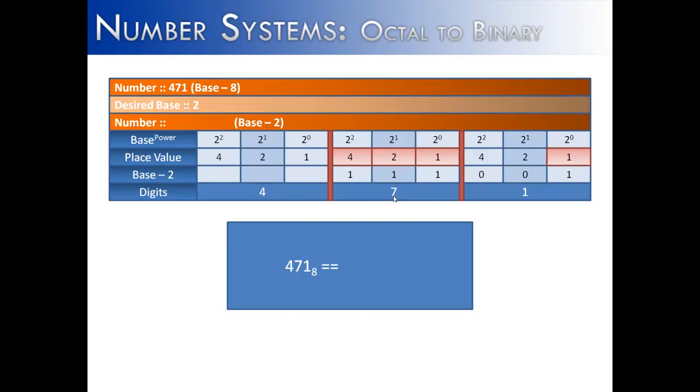And then we do the same thing with the last one, which is going to be a 4. And we're just going to use the first one and add zeros right there. And then what we have accomplished is we take these numbers, which are now in base 2, write them out together, and we say 4, 7, 1 in base 8 is 1, 0, 0, 1, 1, 1, 0, 0, 1 in base 2.